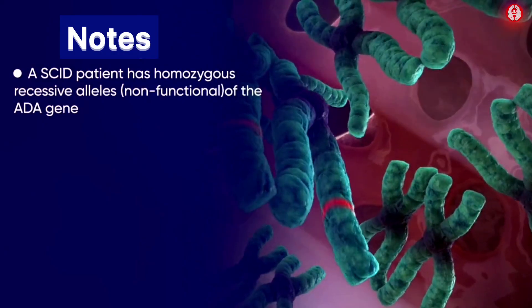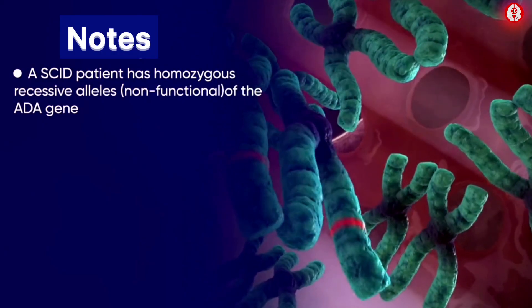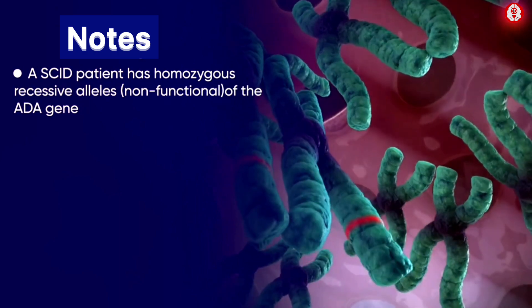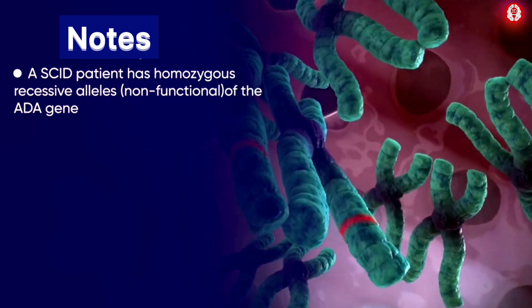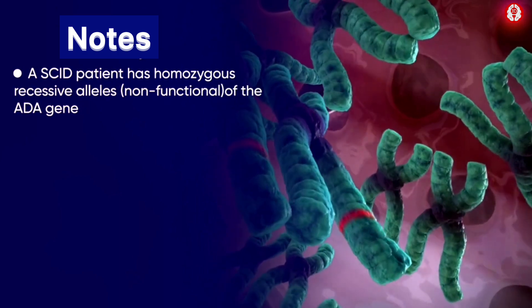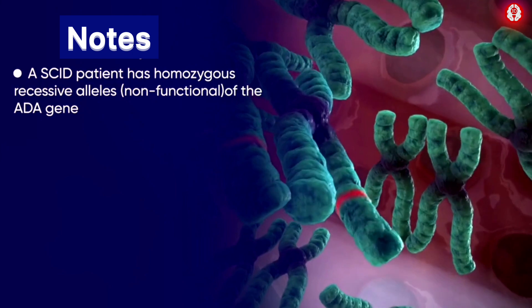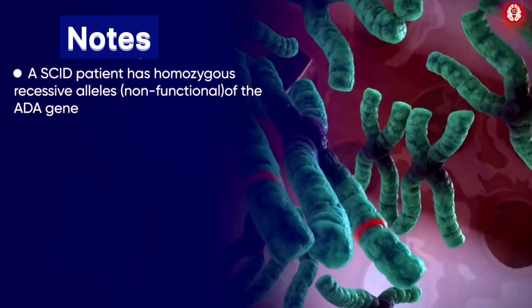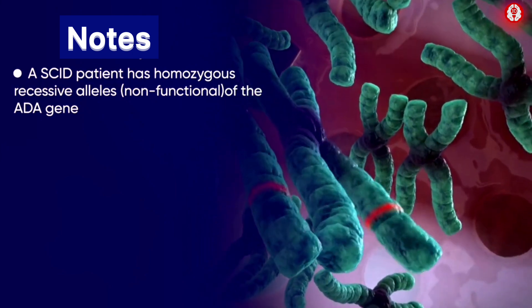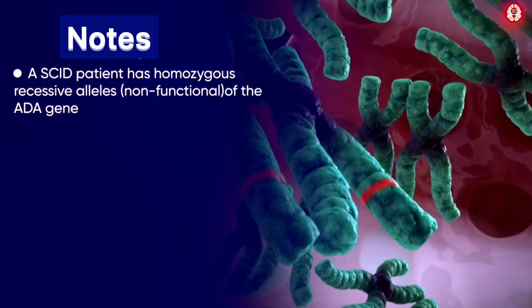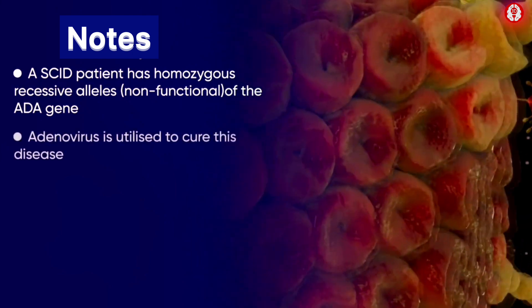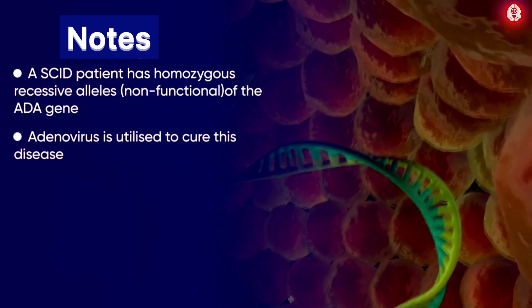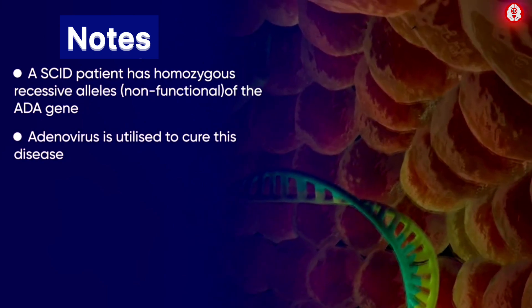When we look at the chromosome of a SCID patient, we can see the homozygous recessive alleles of a gene called ADA, which is non-functional. In order to cure this disease, adenovirus is utilized.